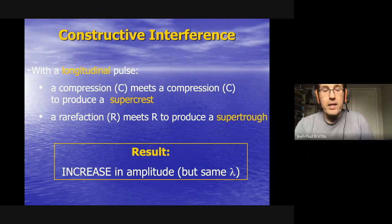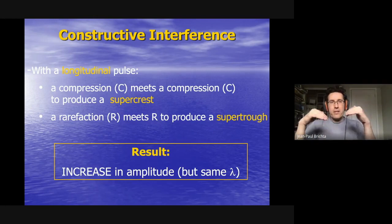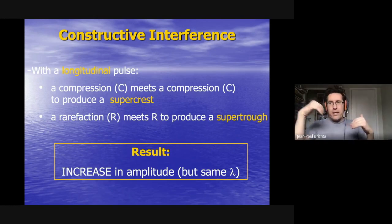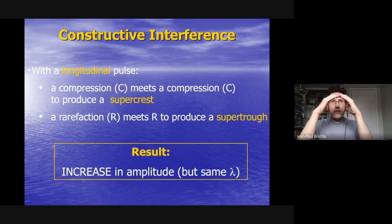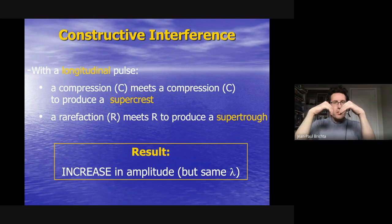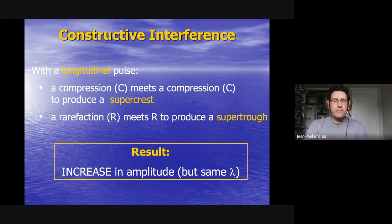The key point in constructive interference: the amplitude of the two waves combines and increases when they meet in the middle. Everything else stays the same — the shape of the wave doesn't change — but the resulting amplitude is larger.